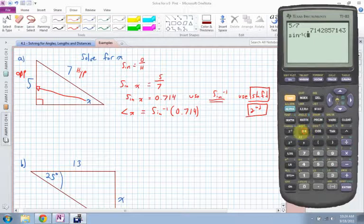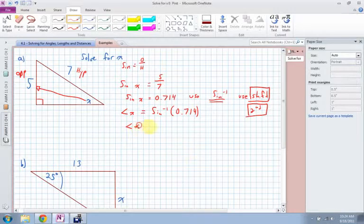So I press second, sine, then I type in 0.714. On your calculators, some of them want you to put in 0.714 first, then do the second sine. It depends on your calculator. Again, you have to make sure your calculator is in degree mode. So I get an answer of 45.56, and that's going to be in degrees. So angle x is equal to 45.56 degrees. So that's how we solve for an angle.